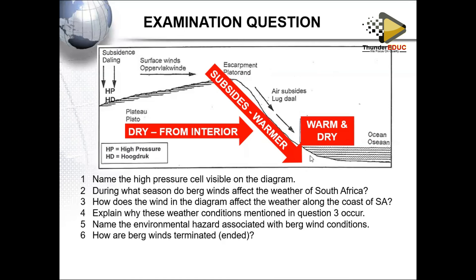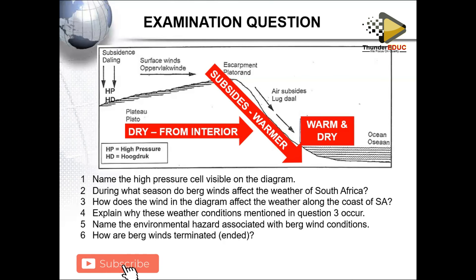Number two: as these winds descend the escarpment, they warm up at the dry adiabatic lapse rate, increasing temperatures and causing warmer conditions at the coast, which starts fires. Question five: name the environmental hazard associated with berg winds. The answer is wildfires — natural fires started at the coast.